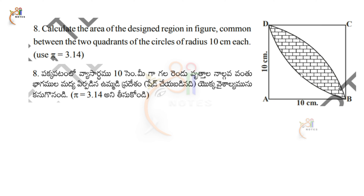So this is a square. From one corner point as center, draw a circle with 10 centimeter radius. Similarly from another corner point C, draw a circle with 10 centimeter radius. The area common to both circles is what we need to find.